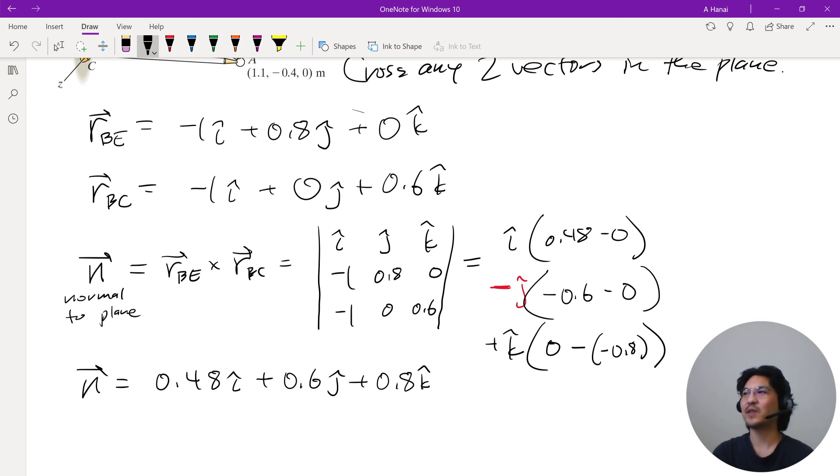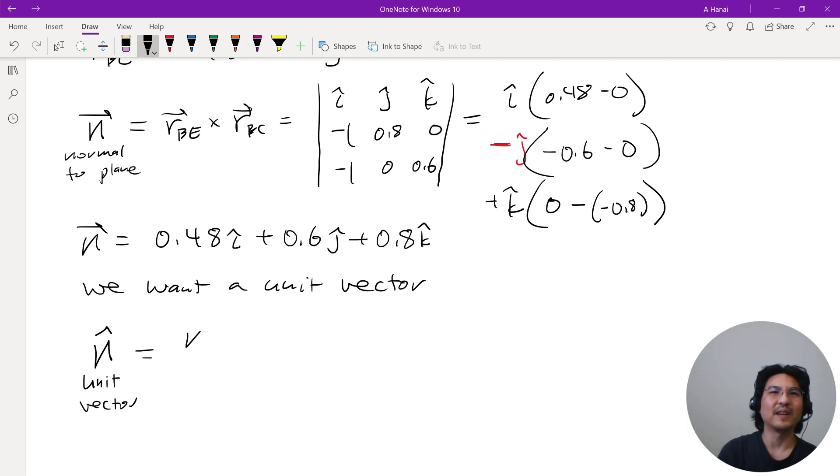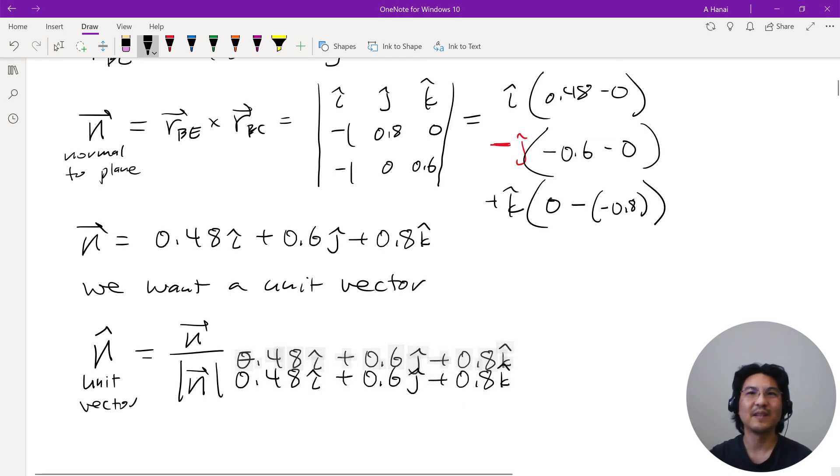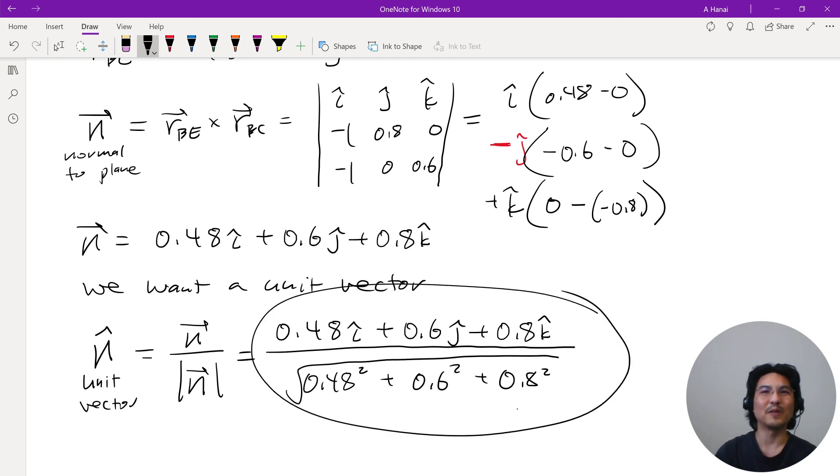So we got our vector that's normal to the plane, but we wanted a unit vector. You just take the vector and divide it by its own magnitude. So if you want n hat, this unit vector, just take vector n divided by its own magnitude. So here's vector n, and then you divide by its own magnitude, which is that squared plus that squared plus that squared, and then square root the whole thing. So now this is a unit vector normal to the plane. Thanks for listening, see you on the next video.